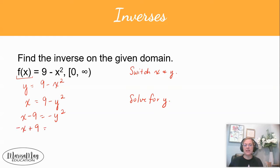And then I need to take a square root to get rid of the second power, so I've got the square root of negative x plus 9.